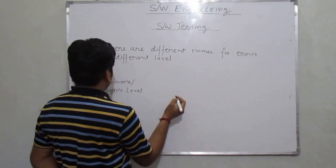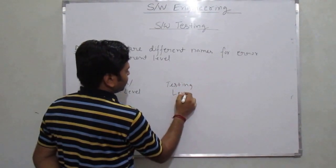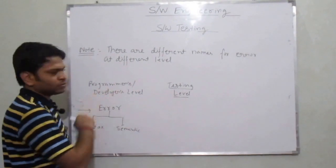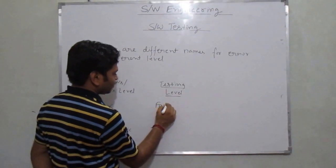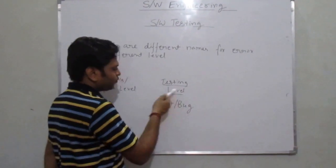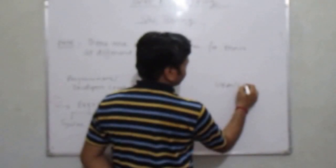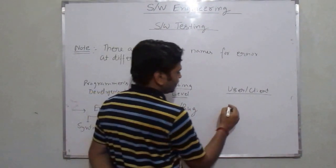At the tester's side, at the testing level, there are sometimes certain errors which cannot be recognized at the programmer's level. When such errors reach the testing level, they are basically known as a fault or bug. A tester will basically do debugging to find out such kinds of errors which had gone uncovered during the programmer's level.